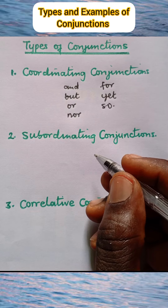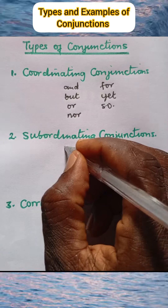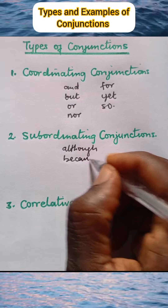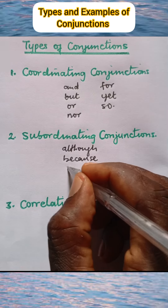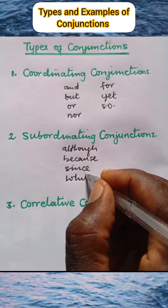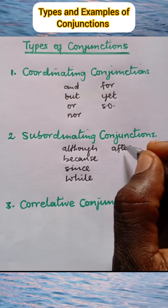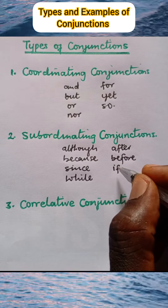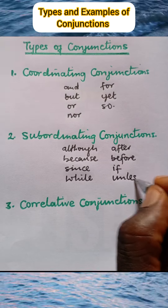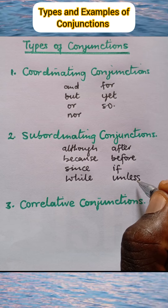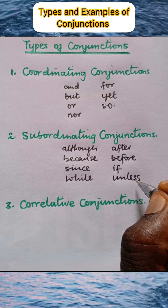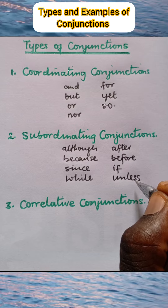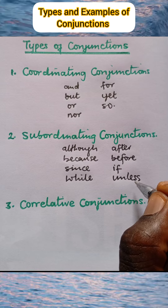Next, examples of subordinating conjunctions: although, because, since, while, after, before, if, and unless. These are used to join two clauses of unequal rank. For example, they join subordinate clauses to main clauses.